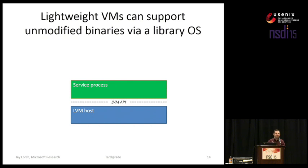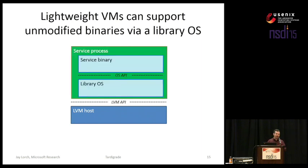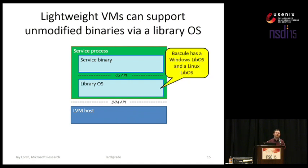Of course, this is no way to run an existing service binary — it's not going to be able to speak this bizarre API. So an LVM is packaged with a library operating system. The library OS goes in the service process (the guest), provides the OS API that the service binary expects, and is para-virtualized to be able to deal with the narrow LVM API. An LVM system like Bascule may have multiple library operating systems for running services expecting different operating systems like Windows or Linux.